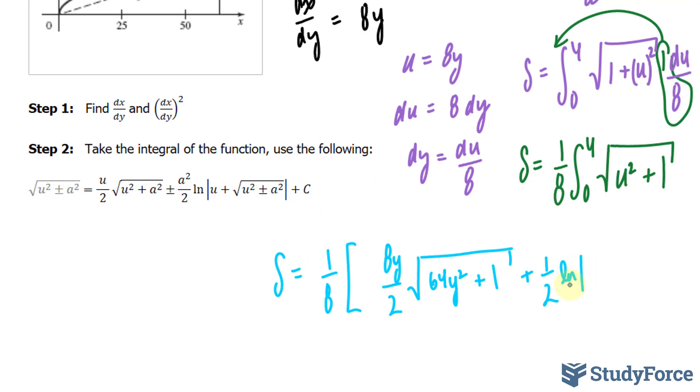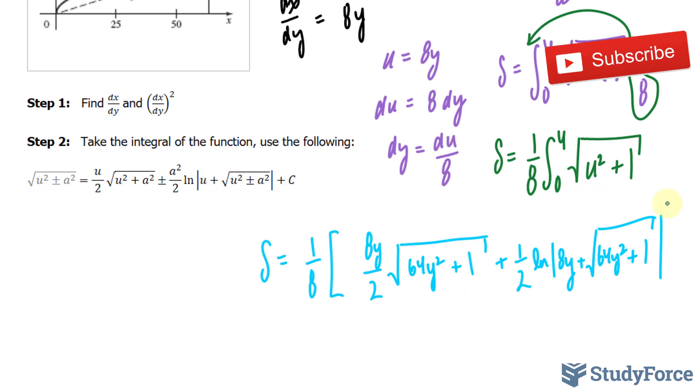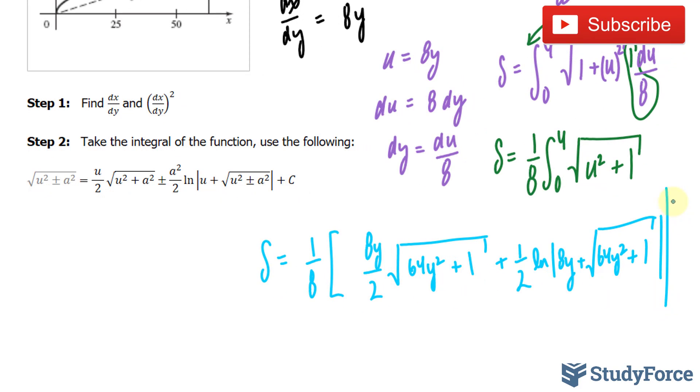ln the absolute of 8y, plus the square root of 64y squared, plus 1, close the absolute, and now we can evaluate at 4 and 0.